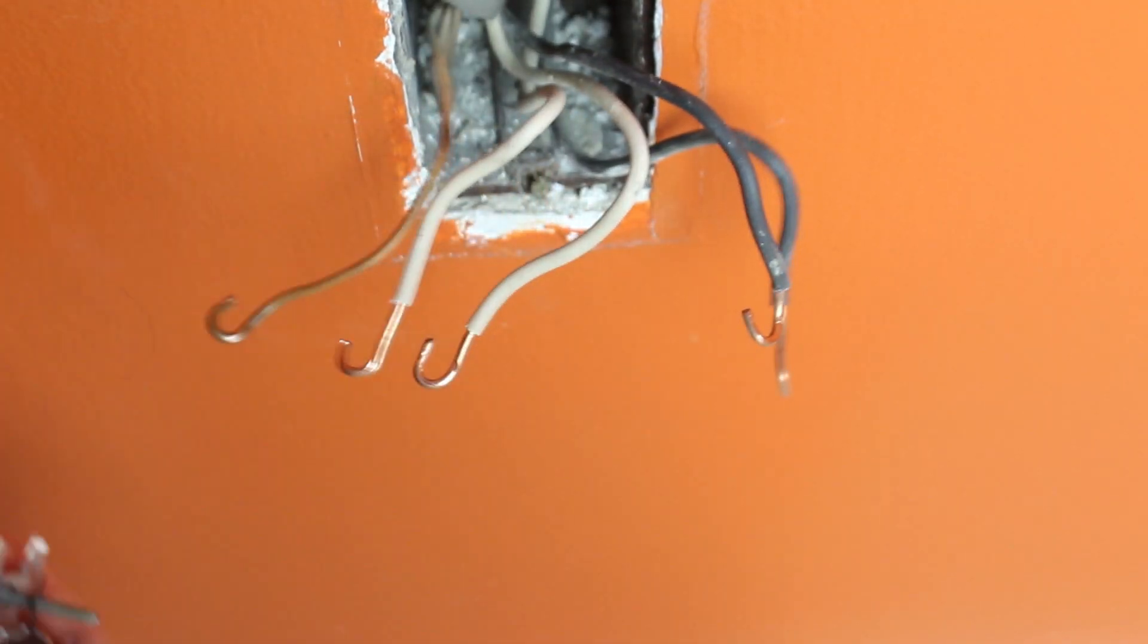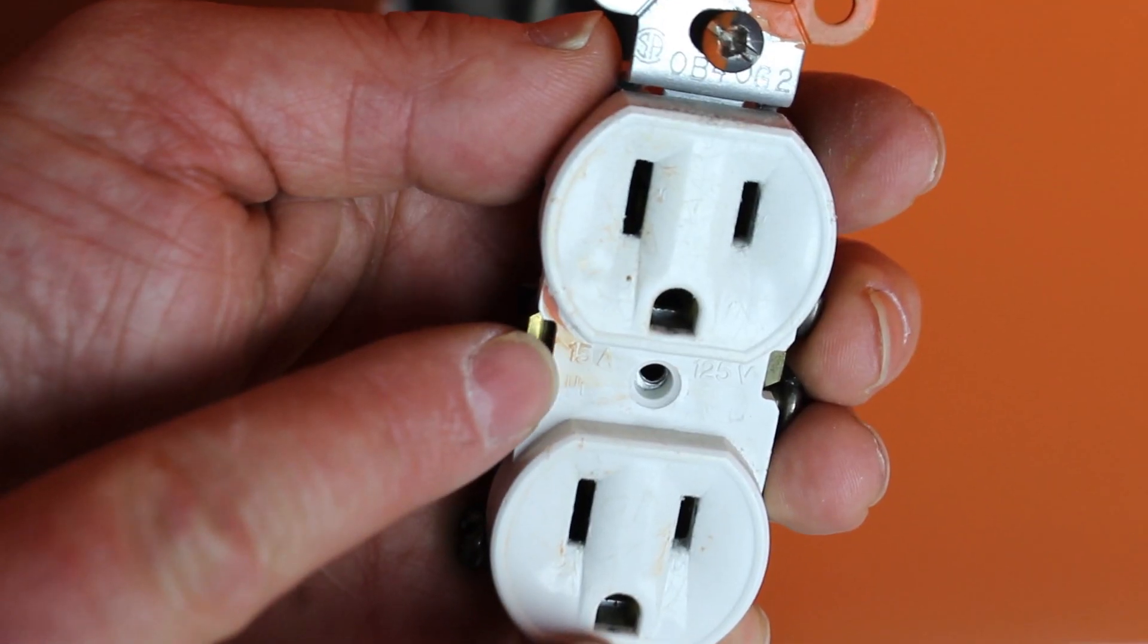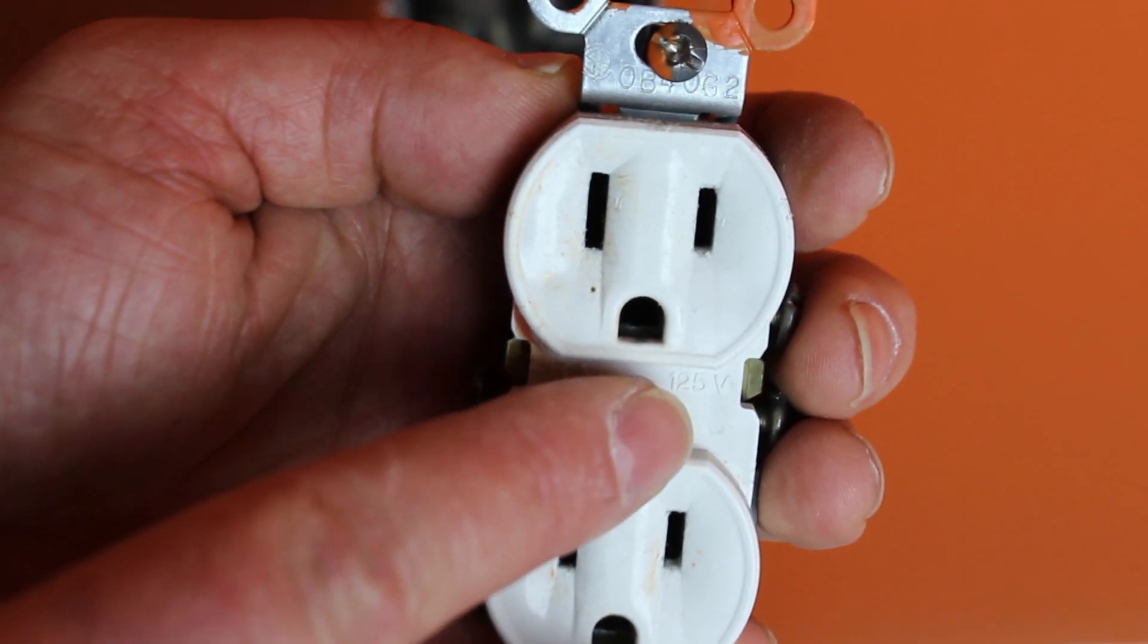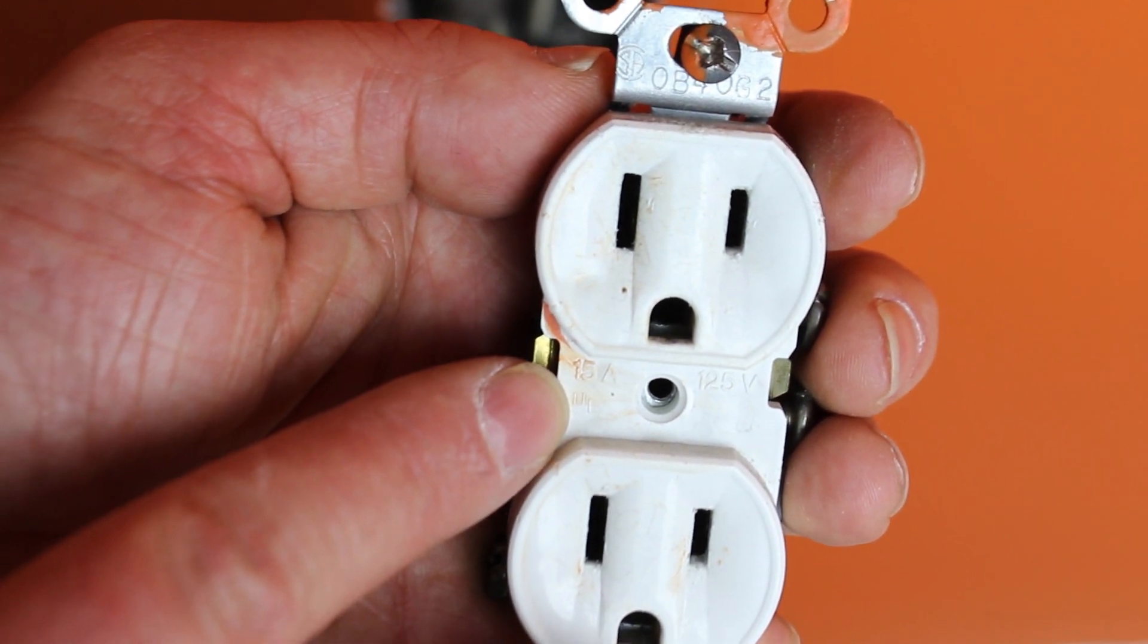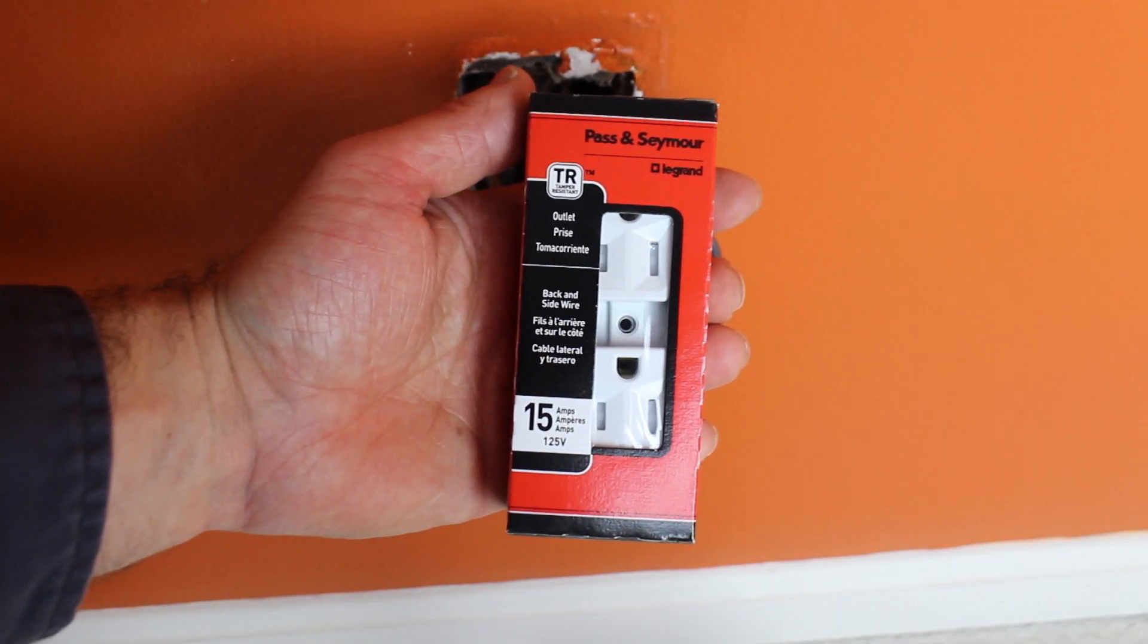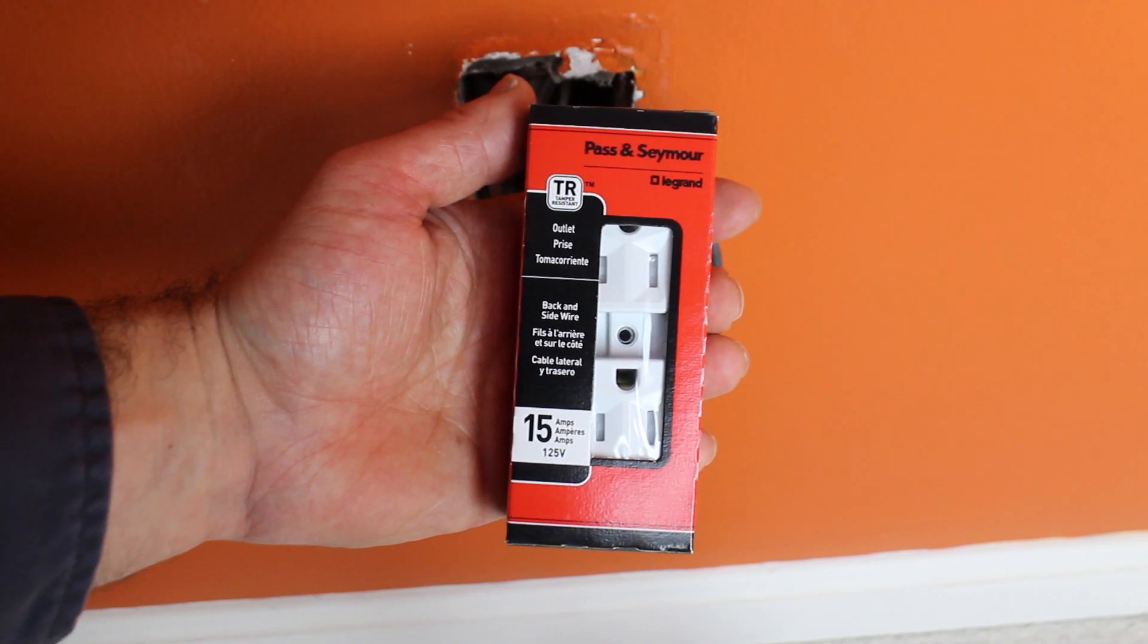The next step is to choose the correct kind of outlet. In this case, I have a 15-amp outlet. I'm going to replace it with—you guessed it—a 15-amp outlet. I chose to get a Pass & Seymour 15-amp tamper-resistant outlet.